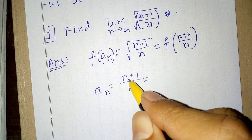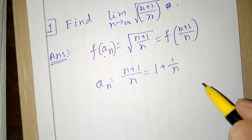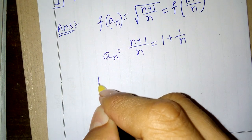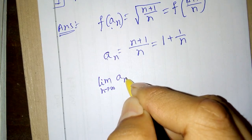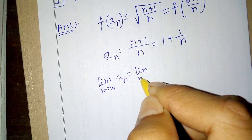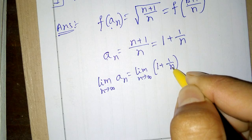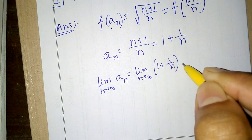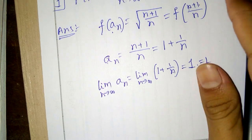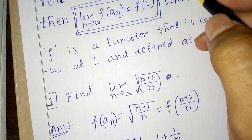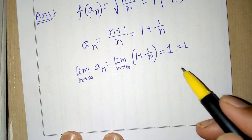This can be written as (n/n) + (1/n), which is 1 + (1/n). So the limit as n tends to infinity of An is the limit of 1 + (1/n). As n becomes infinity, the term 1/n becomes 0, so we get 1. This is equal to L, so here L is equal to 1.